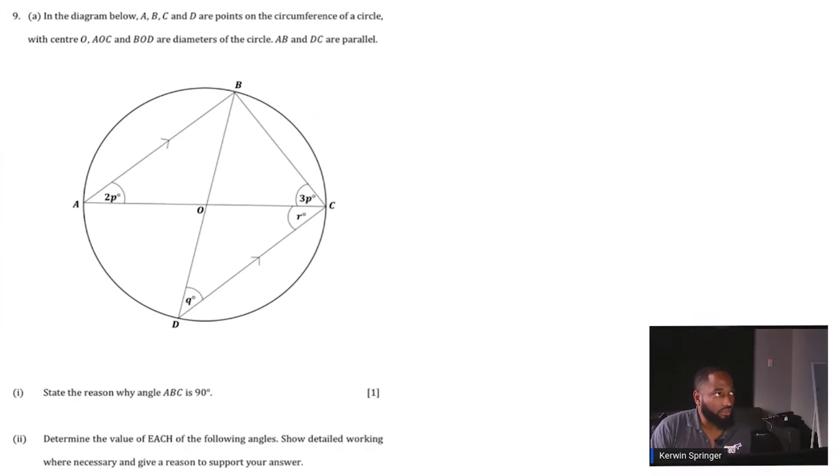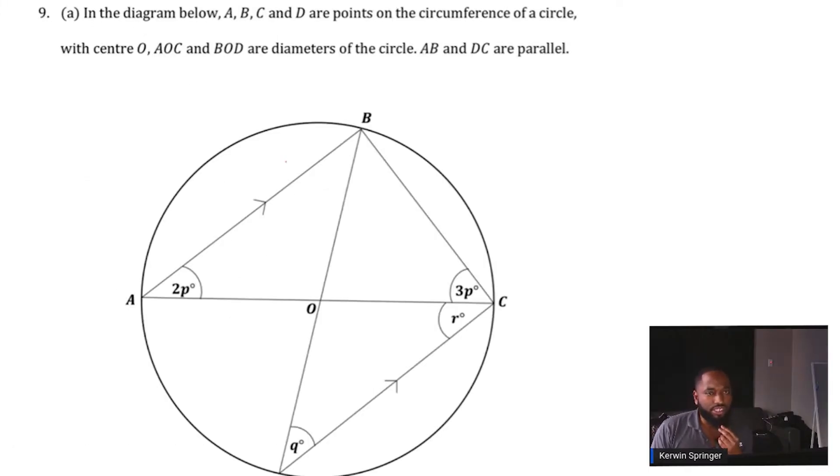In the diagram below, A, B, C, and D are points on the circumference of a circle. These are the points on the circumference of the circle with center O. AOC and BOD are straight lines.